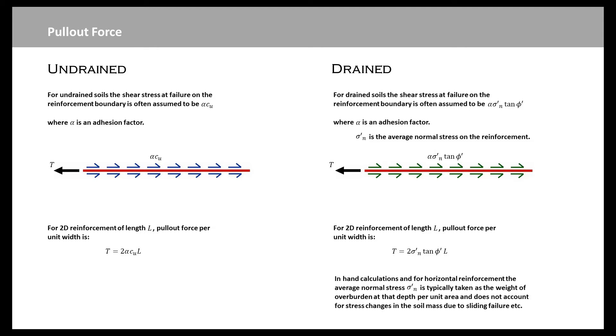Now, in hand calculations of horizontal reinforcement, the average normal stress is typically taken as the weight of overburden at depth per unit area. It doesn't look at lateral stress changes in the soil mass that are due to sliding failure. So, an idealization in that type of conventional analysis.